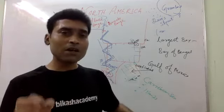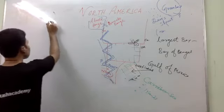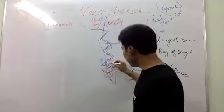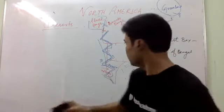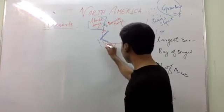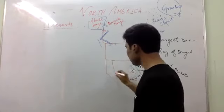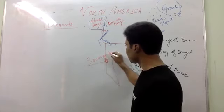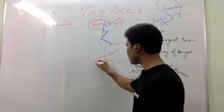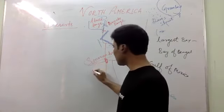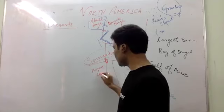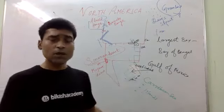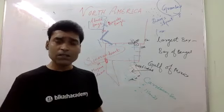Now we will discuss the deserts of North America. The most important one is found in this region — we call it the Sonoran desert, also known as the Mojave desert. You can call it Sonoran desert or Mojave desert — this is very important, please remember it.